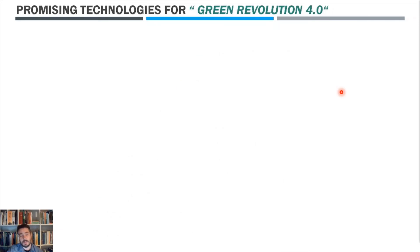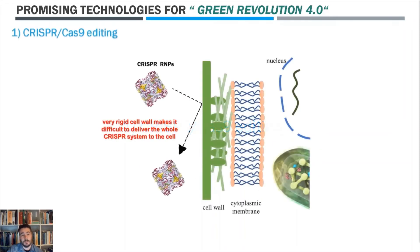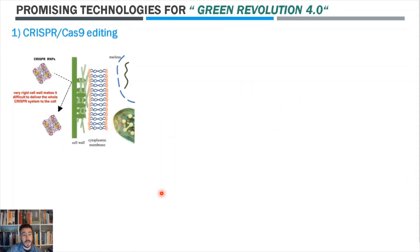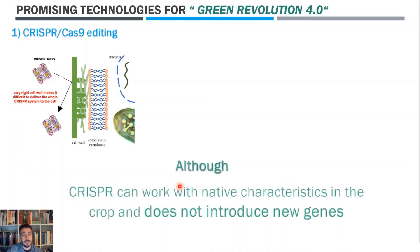I would like to stop at some of the technologies we are interested in and also present some disadvantages, because I think that acknowledging these disadvantages is necessary to move science ahead. So, a little bit about CRISPR-Cas9 editing. The main disadvantage is still the very rigid cell wall in plants, which makes it difficult to deliver the whole CRISPR system into the cell. Also, plants edited by CRISPR are listed as GMOs, although CRISPR, unlike GMOs, works with native characteristics in the crop and does not introduce new genes.